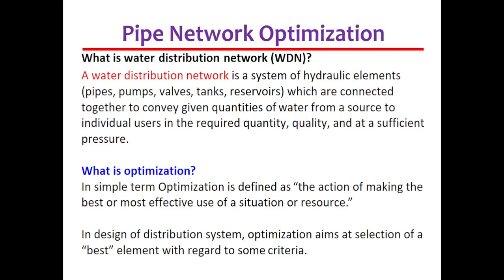First of all, let us understand what is a water distribution network. This is a system of hydraulic elements which comprise pipes, pumps, valves, tanks, and reservoirs, which are connected together to convey given quantities of water from the source to individual users in the required quantity, quality, and at satisfactory pressure.